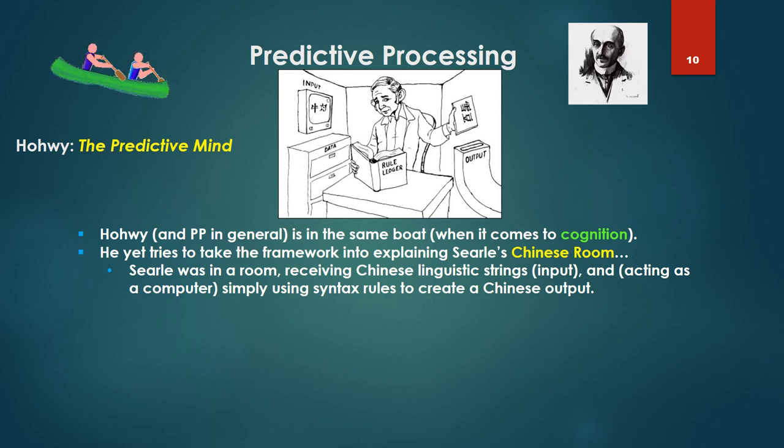Howie and the predictive processing framework in general is in the same boat when it comes to cognition. That is, they really have no grounding for a theory of cognition because they have a non-starter theory in terms of explaining the perception of the world, of the external image, the image of the external world. But he yet tries to take the framework into explaining Charles Searle's Chinese room. If you remember, Searle was in a room, and he was receiving Chinese linguistic strings as input, and simply acting as a computer using syntax rules, was creating Chinese output. And of course he was arguing that in this process there was no comprehension of Chinese whatsoever arising in Searle's mind.